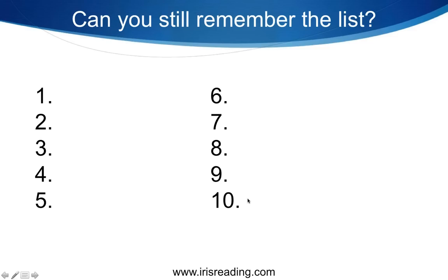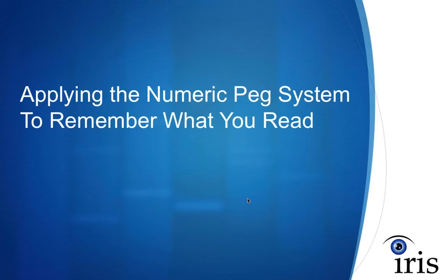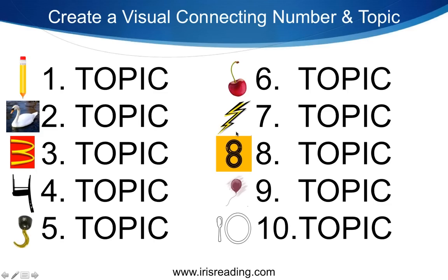Now let's talk about how you apply this to reading. The Numeric Peg System is called that because each number gets pegged to a visual — one was pegged to a pencil, two was a swan, and so on. To apply it to reading, you simply list out the things you need to memorize from what you've read.